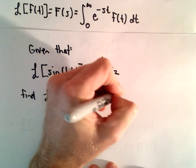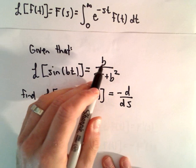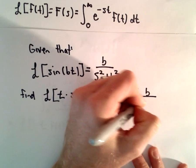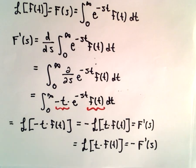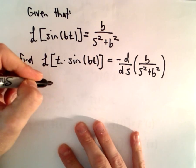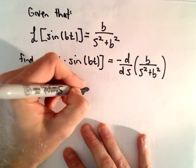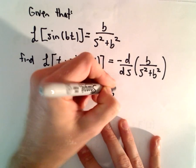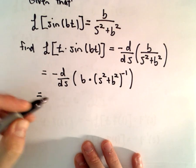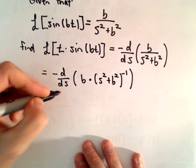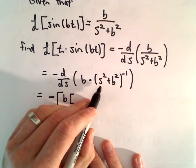According to the theorem, it's going to be negative the derivative with respect to s of our original Laplace transform, which is b over s squared plus b squared. I'm going to rewrite it as b multiplied by s squared plus b squared raised to the negative first power, and I'm going to use the product rule when I take the derivative. There's our negative sign out front, and b is just a constant.